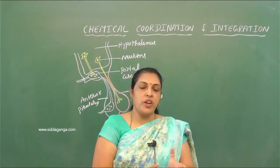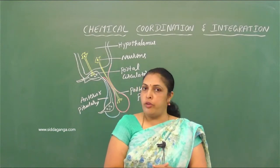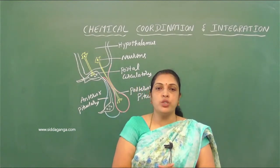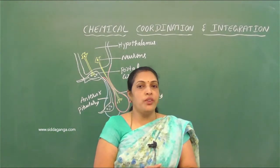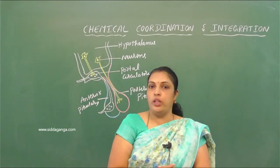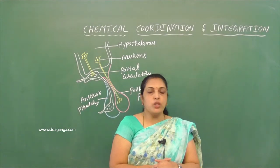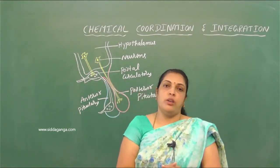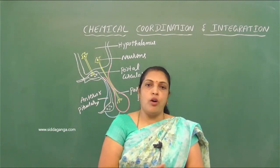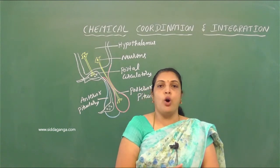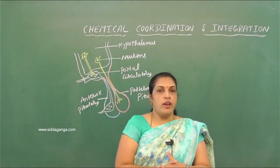The neural system performs this coordination function. However, as the nervous system cannot innervate all the cells in our body, there is a need for another system to bring coordination among the functions of different organs. That is done by the endocrine system. Neural system and endocrine system together bring coordination and integration between different functions of different organs in an organism to maintain homeostasis.